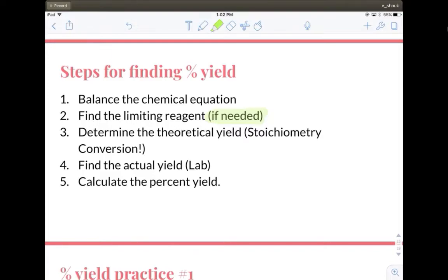The next part is determine the theoretical yield. So this is doing a stoichiometry conversion. At number four you have to find the actual yield. This is either in a lab, so ideally if we were in the lab setting you would have that, or this will be given in the problem and then you calculate the percent yield. So you have to always go through these five steps before you can find percent.